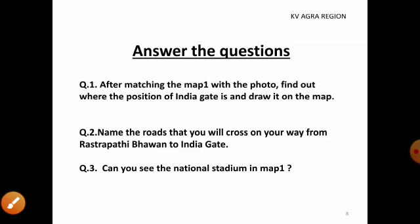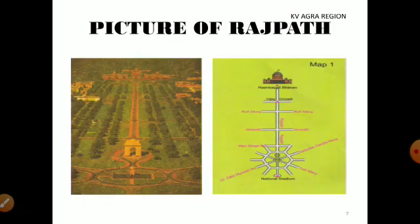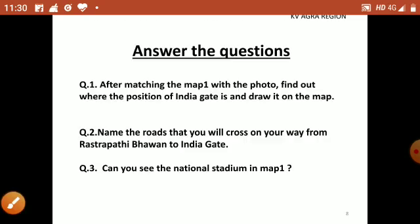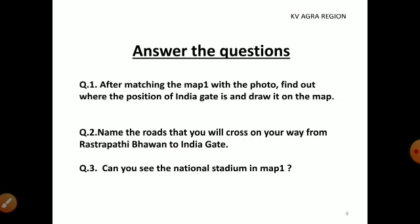Let's move to the second question: name the roads that you will cross on your way from Rashtrapati Bhavan to India Gate. Let's look at the map. Here is Rashtrapati Bhavan and here is India Gate. From Rashtrapati Bhavan to India Gate, you will cross Rafi Marg, Janpath, and Mansingh Road. So these three roads — Rafi Marg, Janpath, and Mansingh Road — will take you to India Gate from Rashtrapati Bhavan.